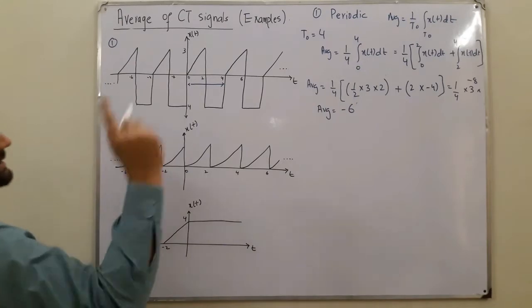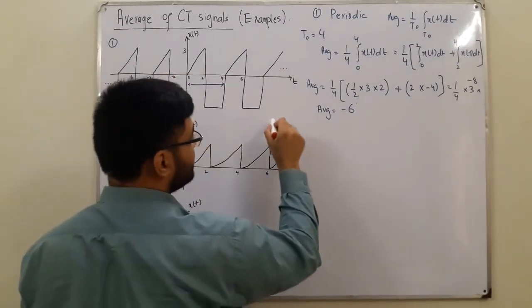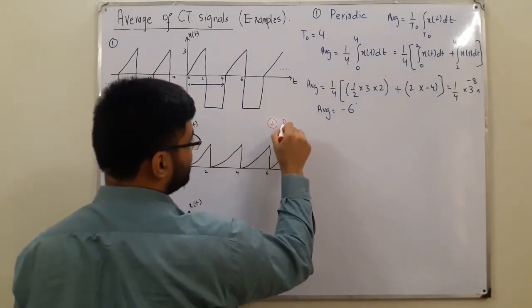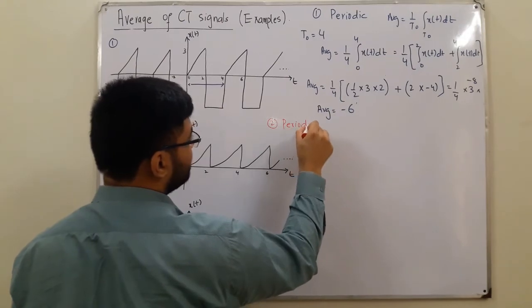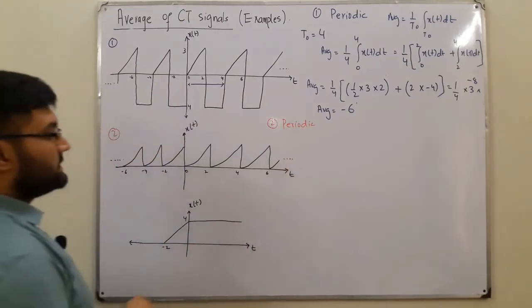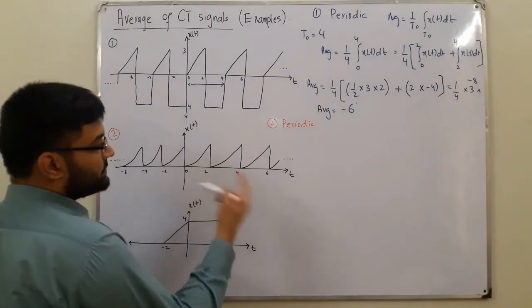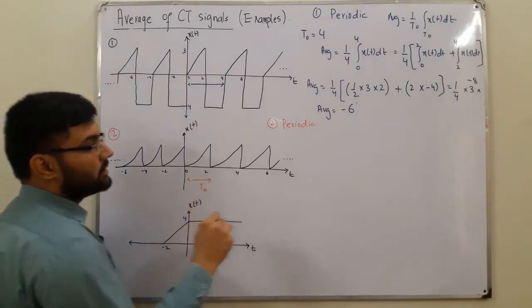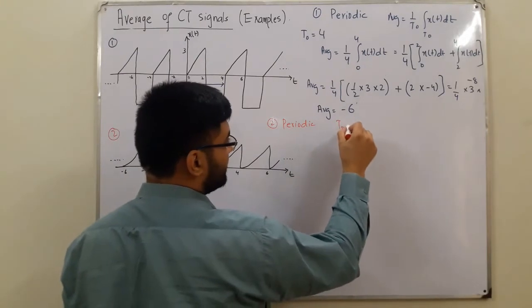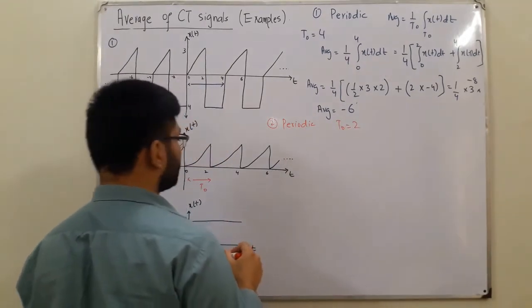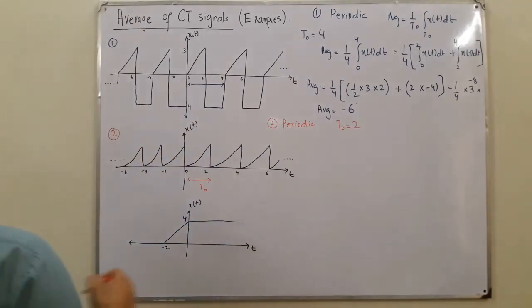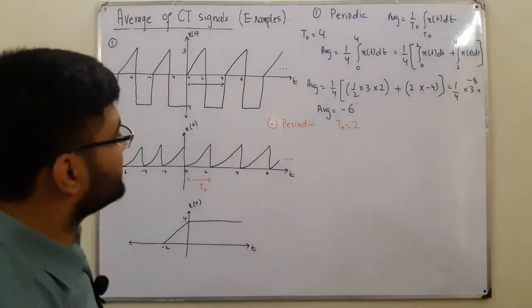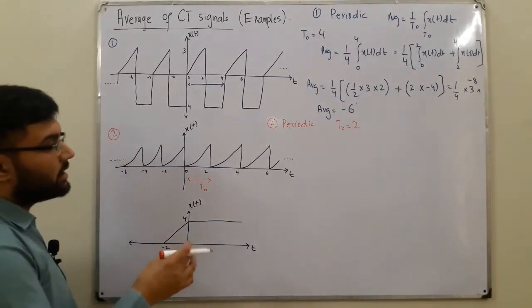Coming to the second question, let's say I do it with the red color. The second question, it is also a periodic signal, isn't it? So it's repeating after each 2 seconds, 2 units of time. This is your time period T naught, so I would write over here T naught is equal to 2.